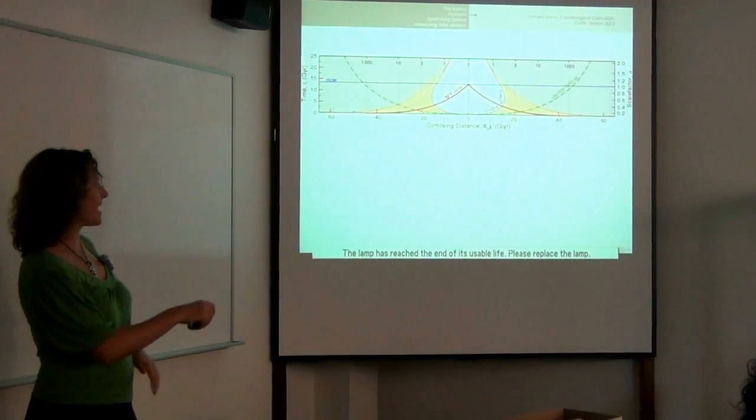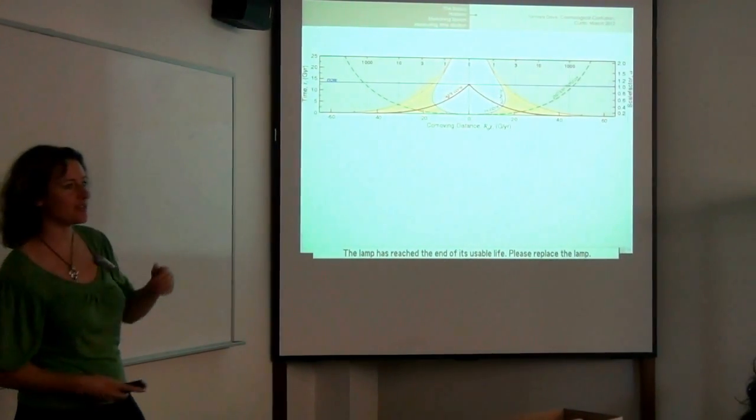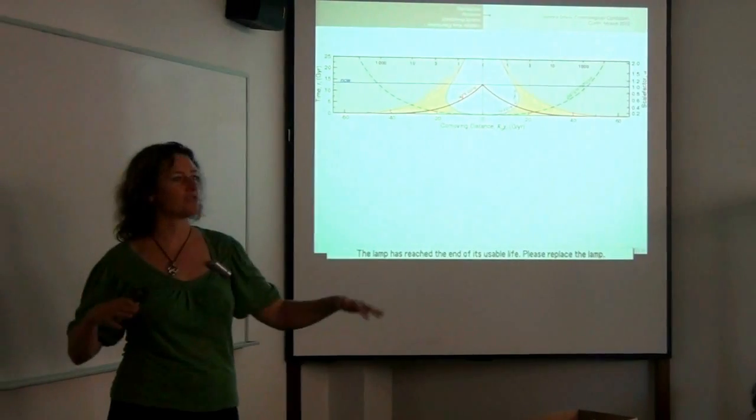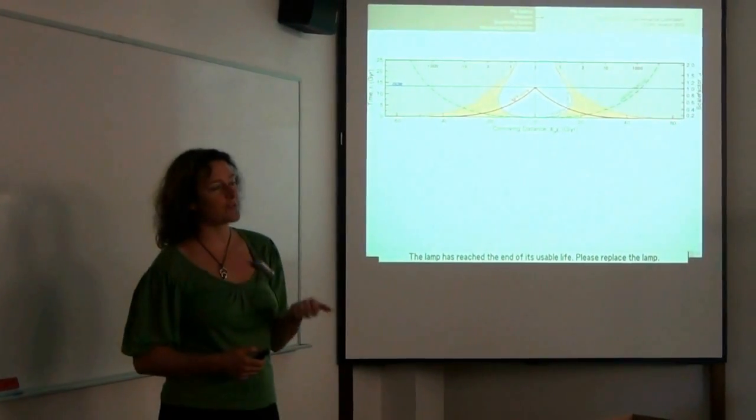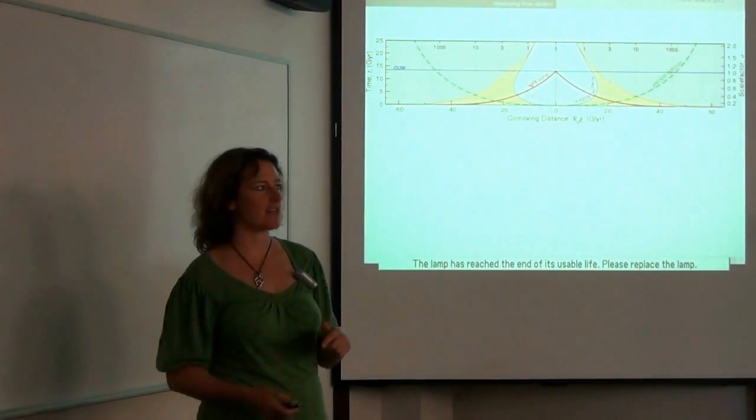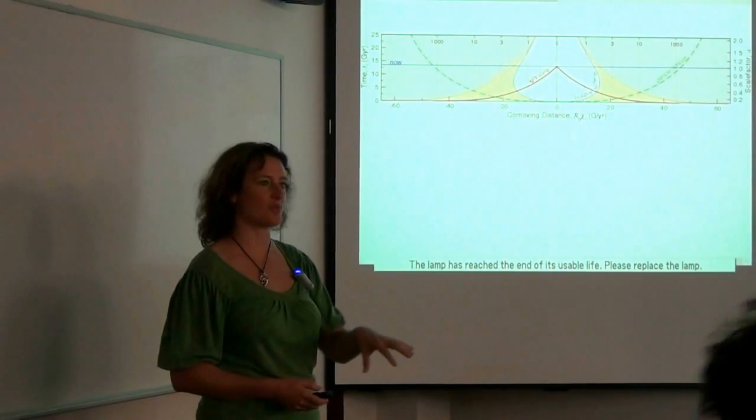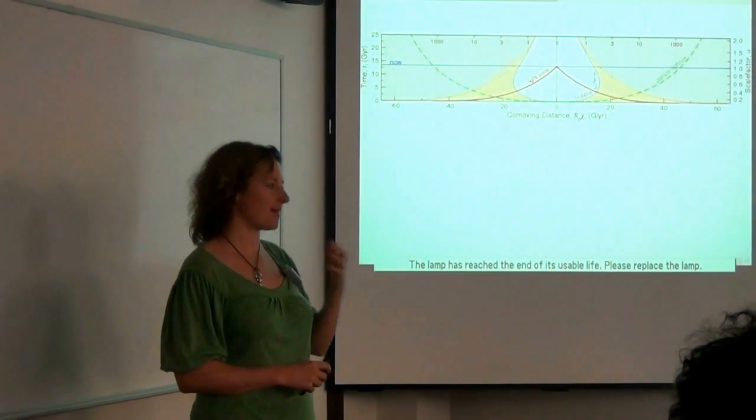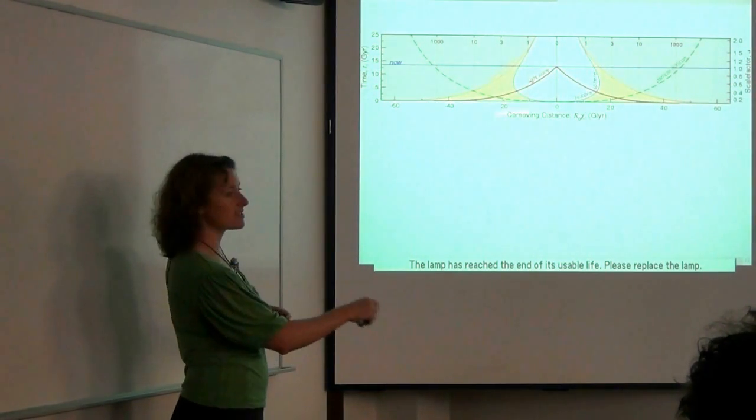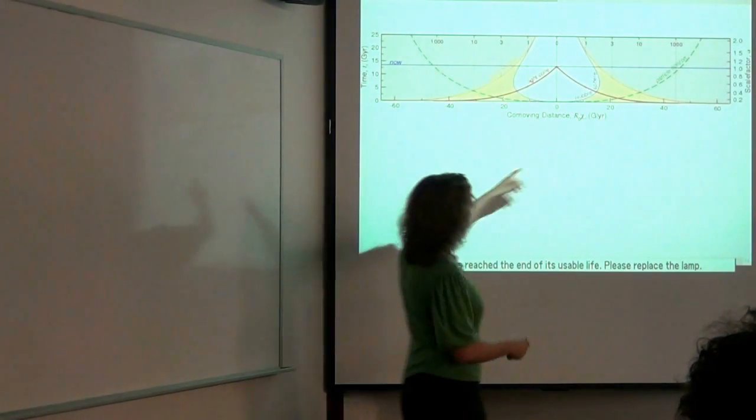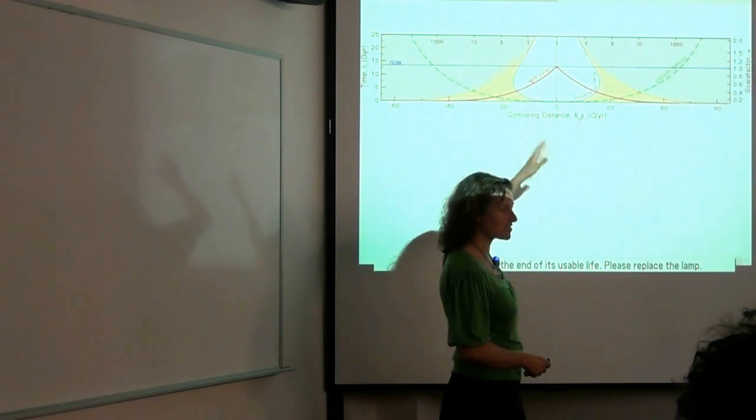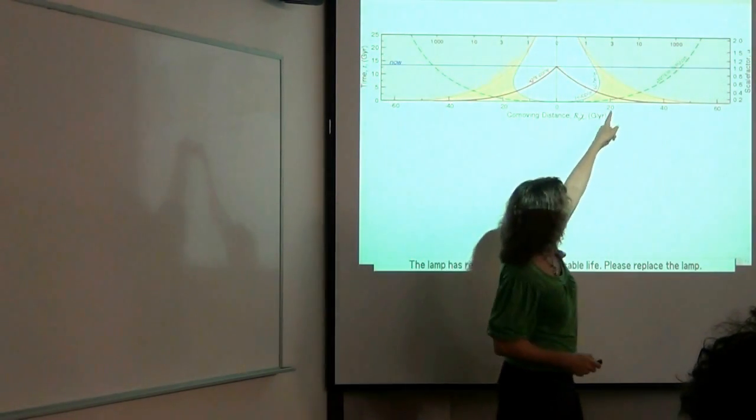So here is the universe that we think we actually live in. This is a universe that has 30% of the critical density, where the critical density is the amount needed to have the universe flat. The 30% is in the form of matter. That includes both normal matter and dark matter. 70% is in the form of dark energy, specifically a cosmological constant. So this is observationally about the favored model that we have of the universe at the moment. I've drawn this in co-moving distance. So this is the chi here, just multiplied by the current size of the universe to get it into units. And so here is 20 billion light years away.